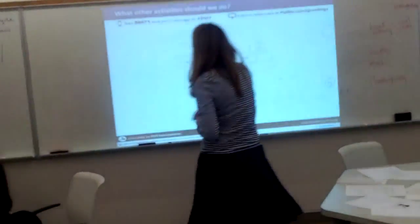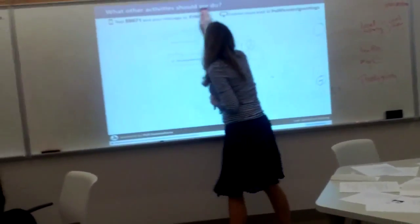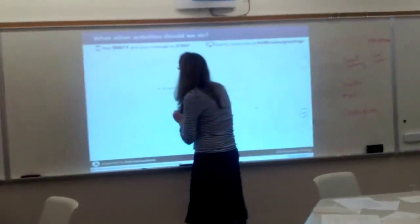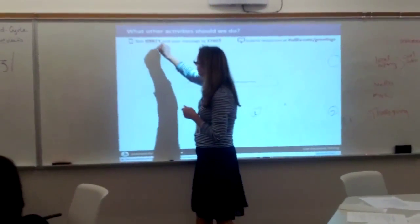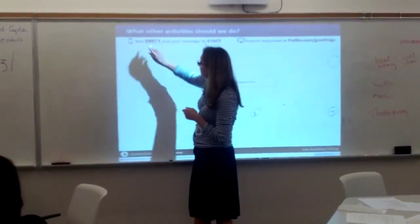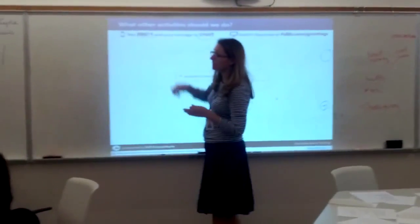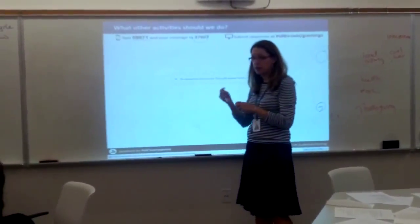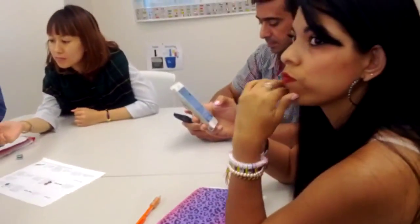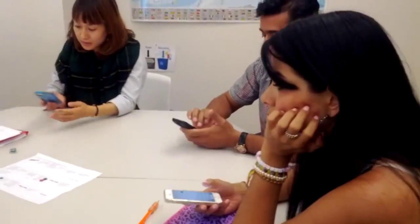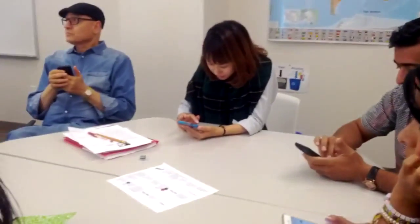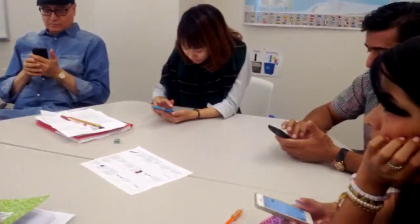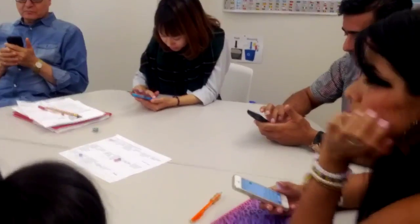To vote, you send a text to the same phone number — you type in this number, 59871, then a space, and then your activity code. For people whose phones are not working or who can't do it by phone, they can go ahead and write their topic instead.